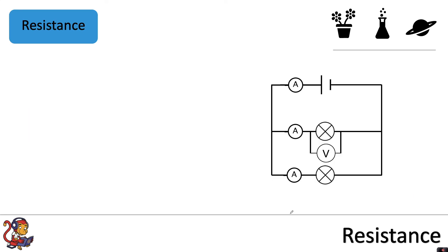You can do the same in the parallel circuit. For example, if you wanted to measure the resistance of this lamp here, you would need to put the ammeter in the same branch as the component you're measuring and you'll need to put the voltmeter across the component that you're measuring.